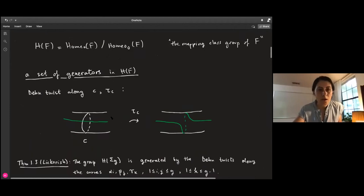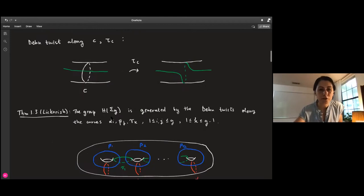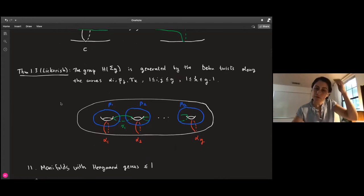We have a set of generators in the mapping class group. If we take any simple closed loop in the surface, we can cut along that curve, rotate one end by 360 degrees, and glue it back. That's an element called a Dehn twist. Lickorish shows that the mapping class group of a genus G surface is generated by Dehn twists along these curves.